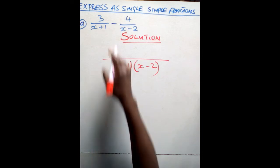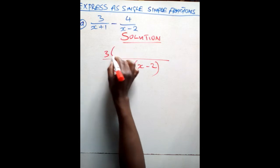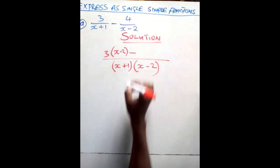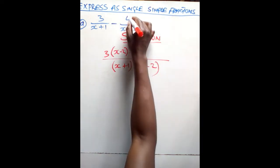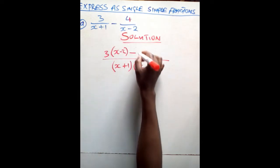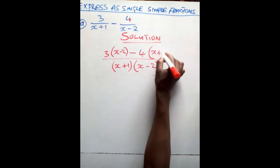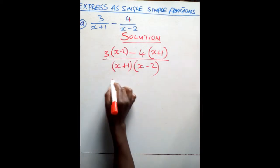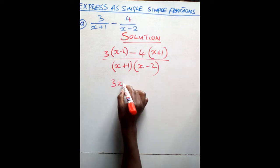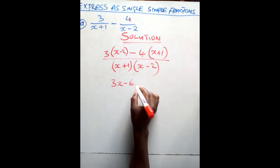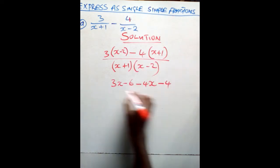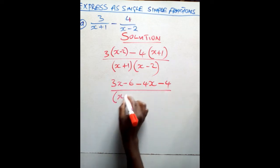Then the next step: cross multiply. To cross multiply, you just have this 3, then multiply it by (x minus 2) — minus, this minus is the mathematical operation coming from there — then you have this 4 multiplied to (x plus 1). After this point, you have to open the brackets in the numerator. 3 times x will give you 3x. 3 times negative 2 will give you negative 6. Negative 4 times x will give you negative 4x.